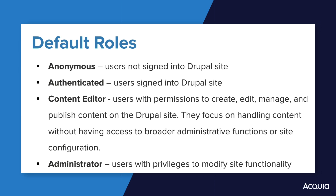Out of the box, Drupal Core comes with default user roles: the anonymous user, the authenticated user, the content editor, and the admin user. The anonymous user is the role used for users that do not have a user account or that are not logged in and authenticated. The authenticated user is a role that is automatically granted to all logged in users. The content editor is the user with the permission to create, edit, manage, and publish content, and the administrative user has access to most site functionality.